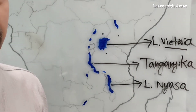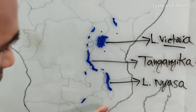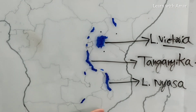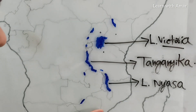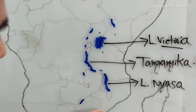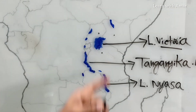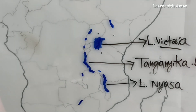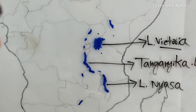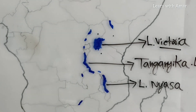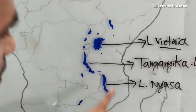Learning the location of countries is very, very important. If you do not learn the location of those countries, it is difficult for us to identify the location of these lakes.